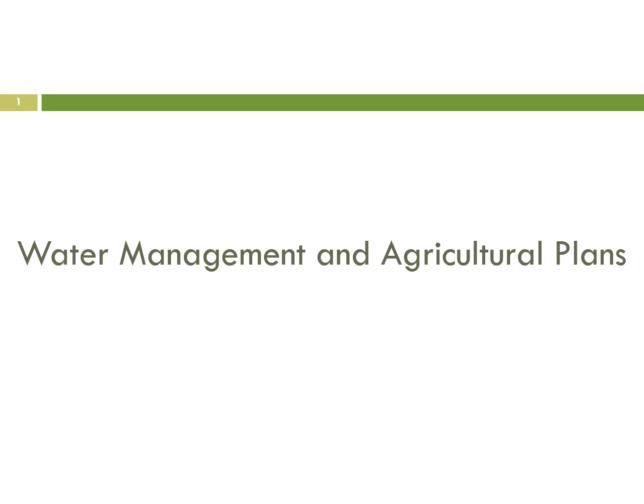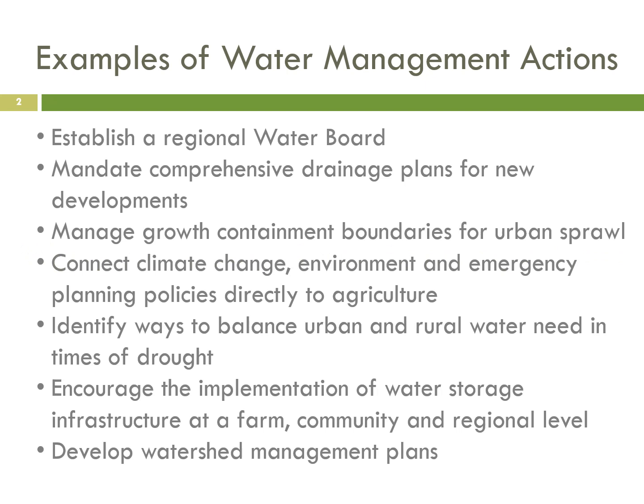In this presentation we'll be providing some examples of water management actions found in other communities for inspiration for the Comox Valley Agricultural Plan, as well as reviewing current initiatives underway with regards to watershed planning within the regional district itself, followed by a series of questions that can be completed through the online survey link also available on the website. To start, here are some examples of water management actions that we find often in agricultural plans in other communities.